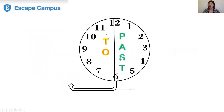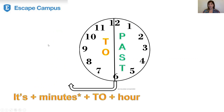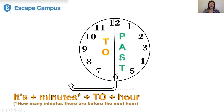If we are on the left side of our clock — from number six to number 12 — we use 'to.' We say: it's plus the minutes plus to plus the hour. We use the minutes before the hour. Here, the minutes are the ones before the next hour.